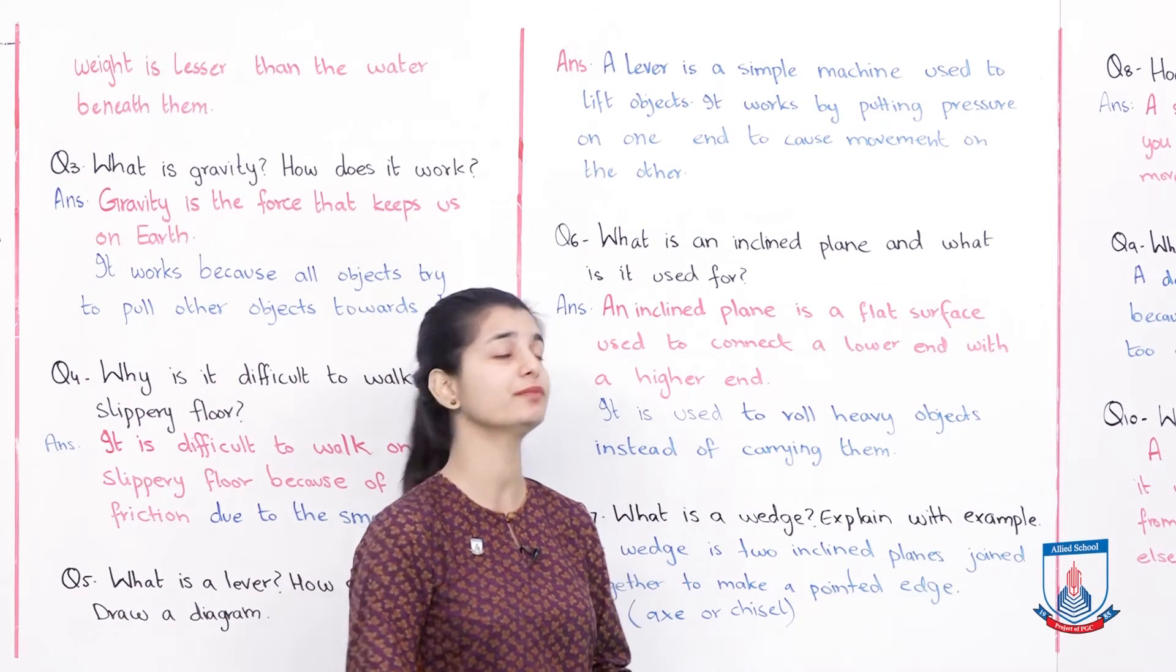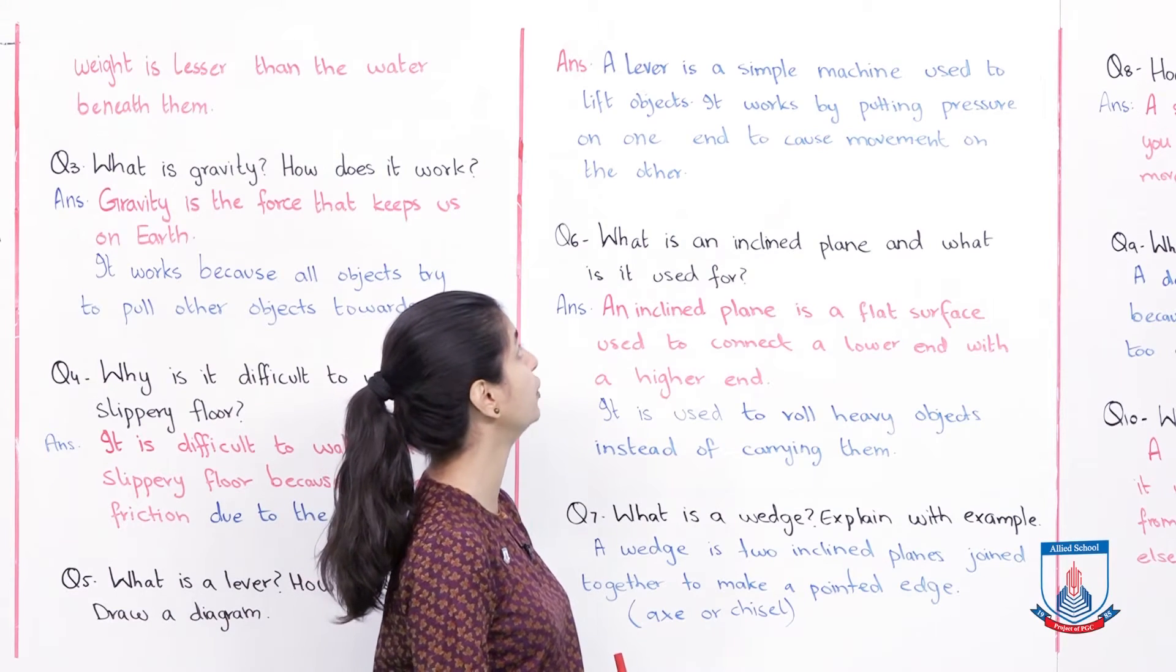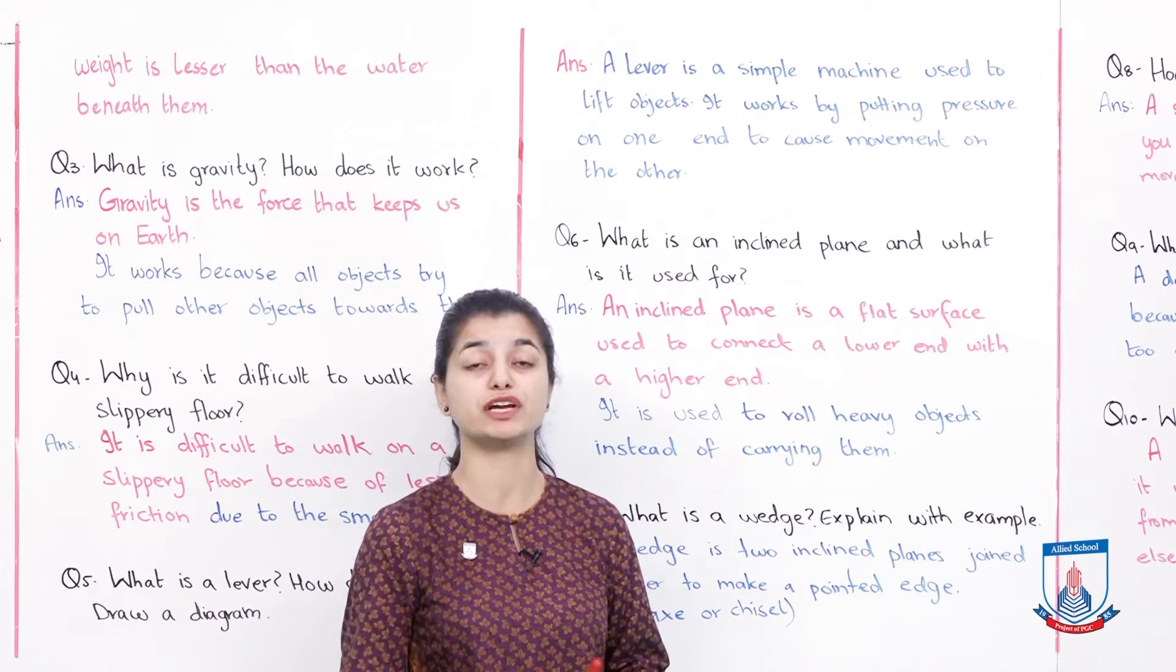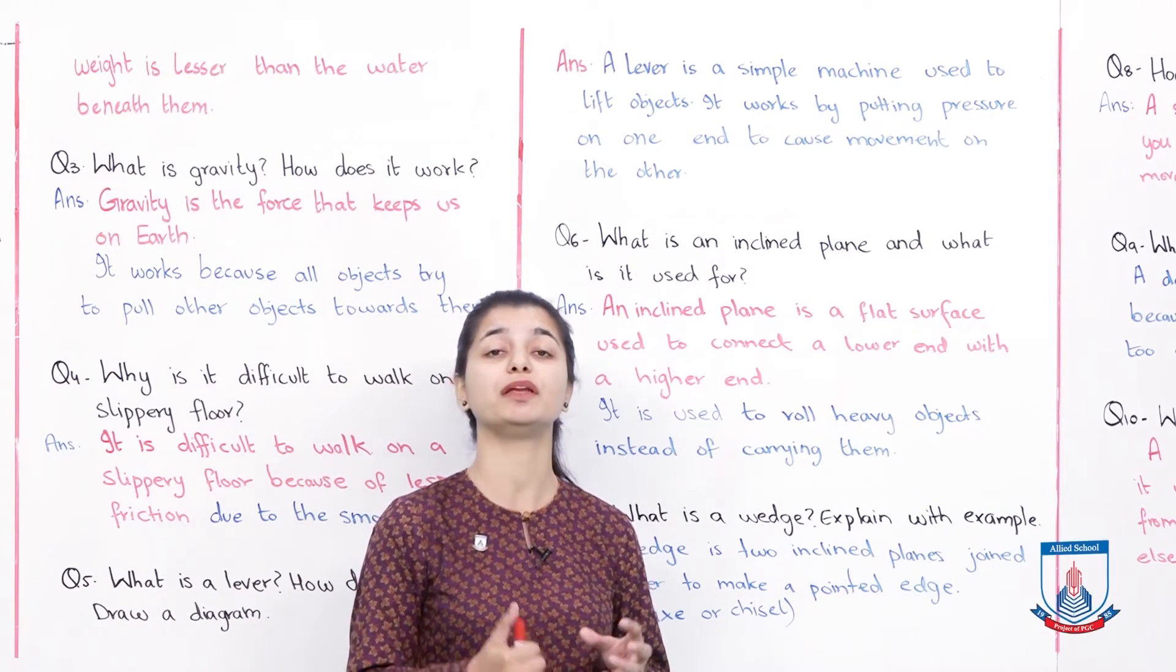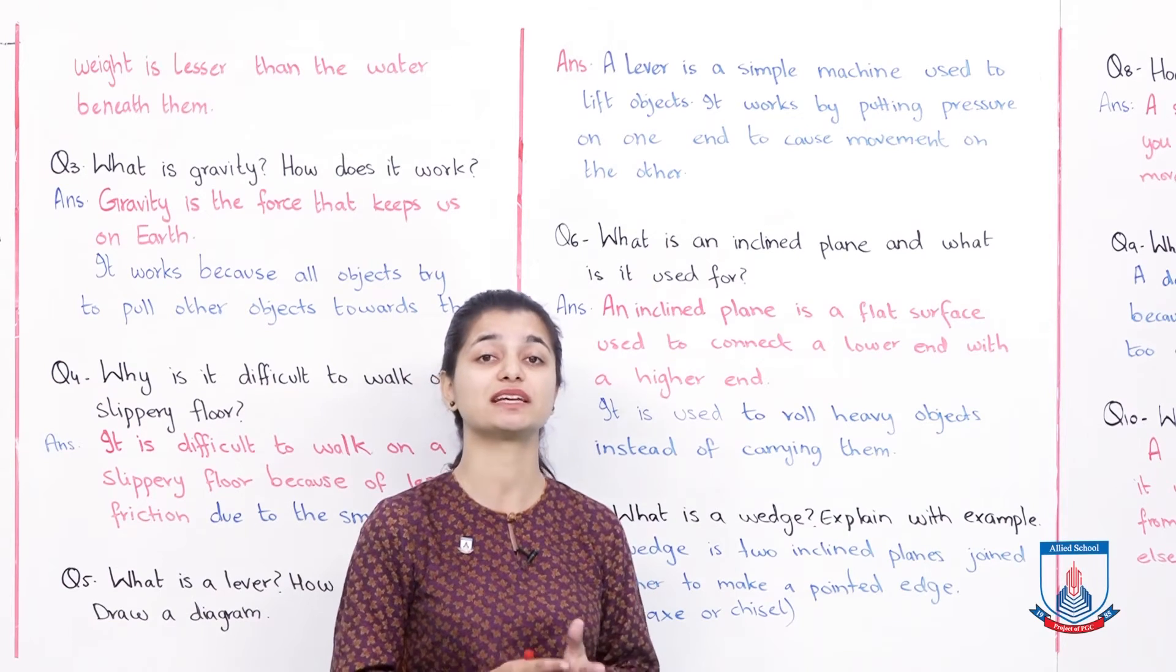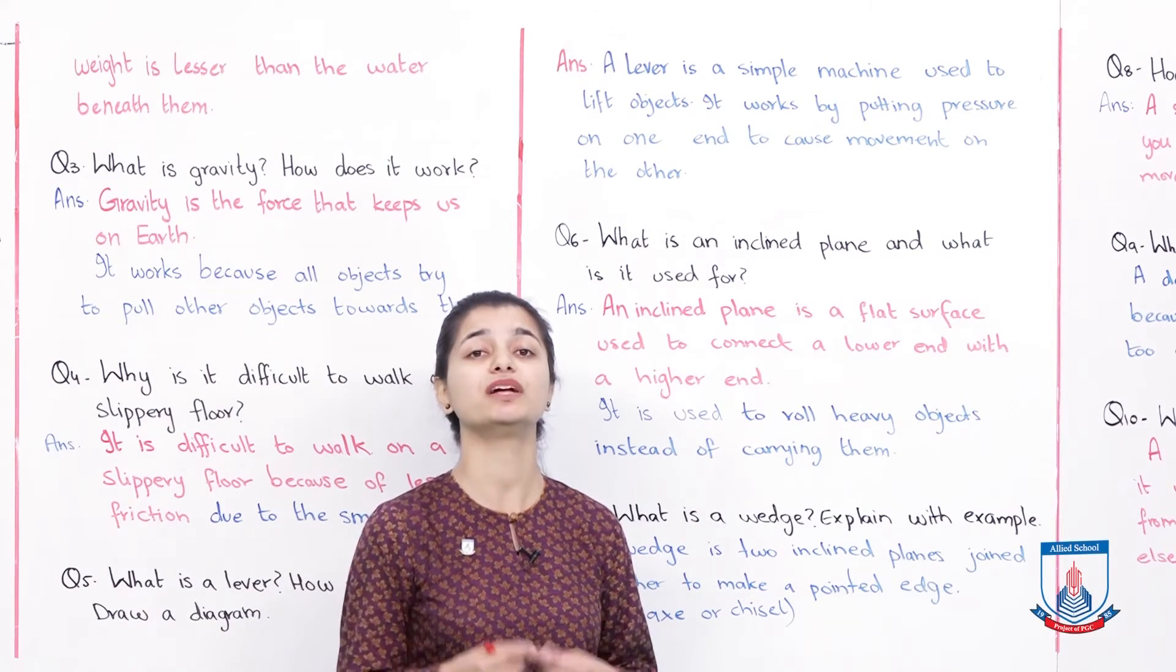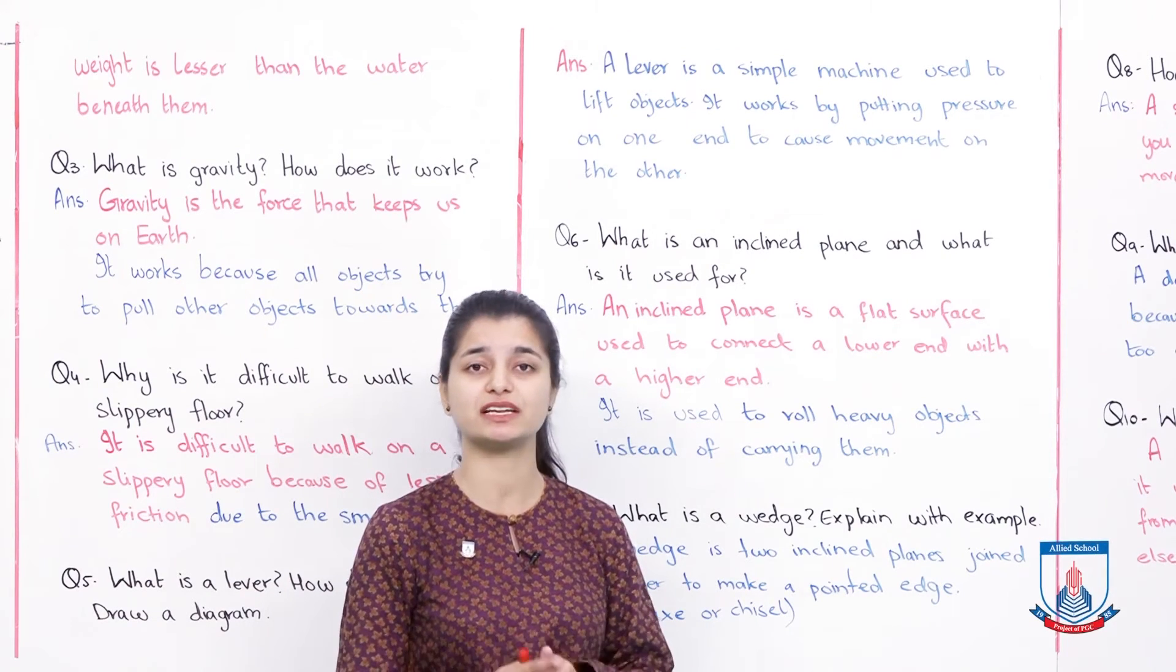A lever is a simple machine used to lift objects. It works by putting pressure on one end to cause movement on the other end. We talked about seesaws and tweezers as examples. You can draw a diagram showing a lever arm or a seesaw to demonstrate how the lever is being used.